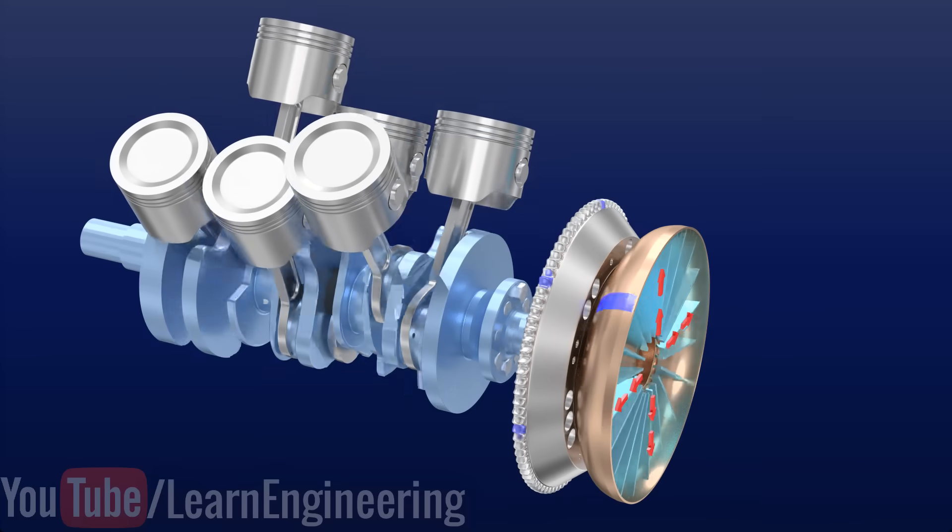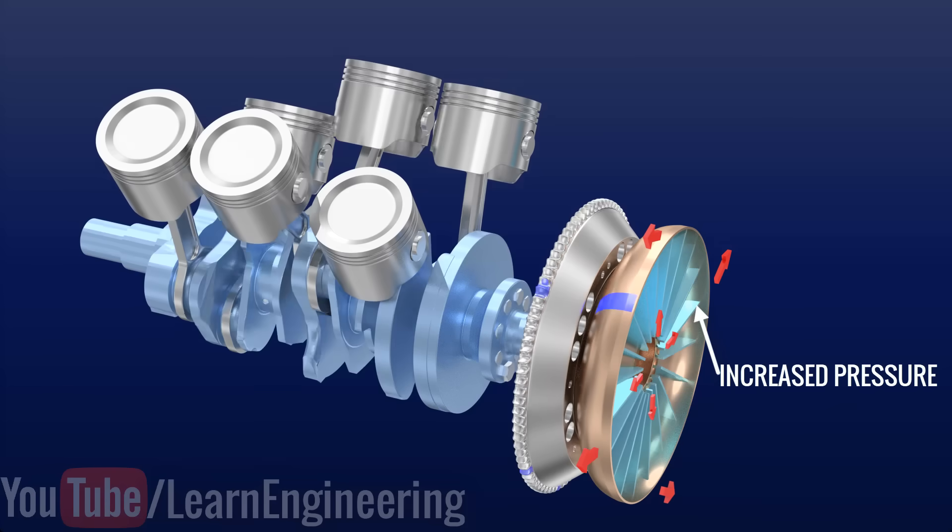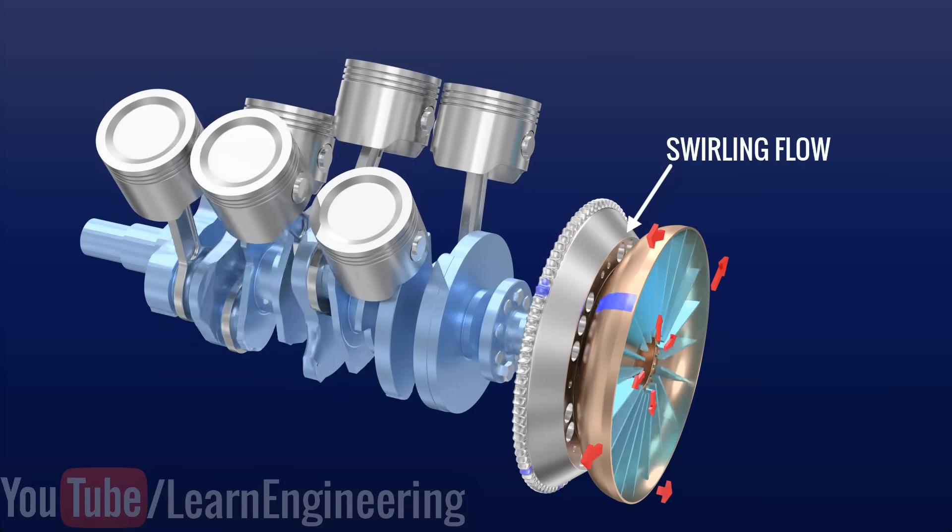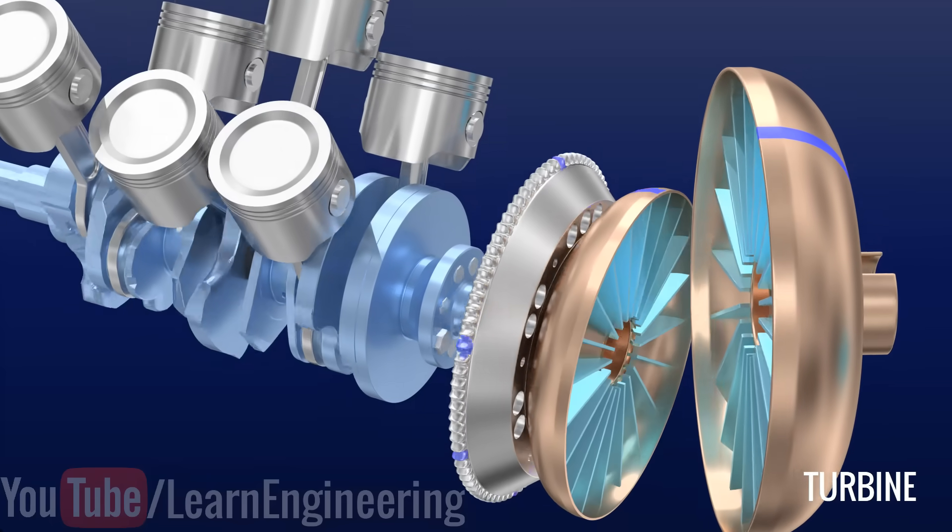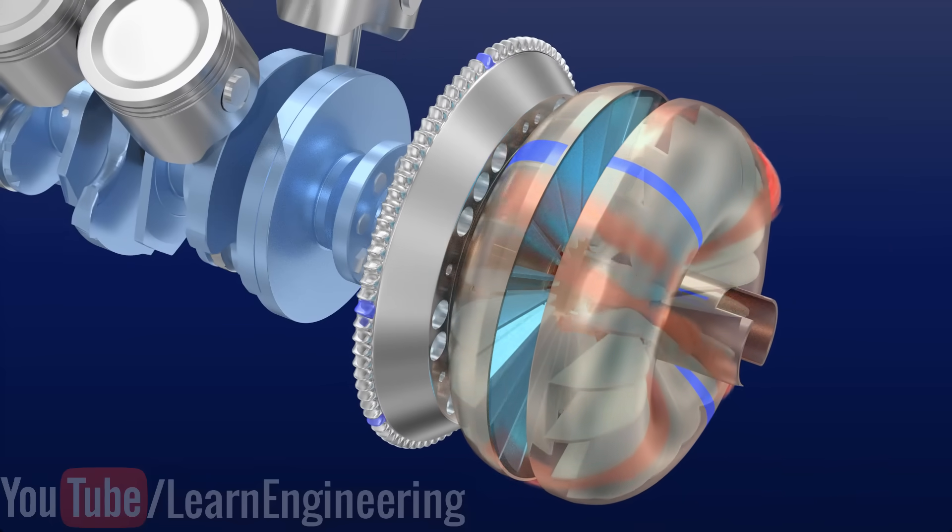The liquid surrounding the pump will be pushed outwards due to the centrifugal force and its pressure increases. The rotation of the pump adds a swirl to the liquid leaving the pump. The turbine sits near to the pump and the high-energy fluid coming out of the pump turns the turbine.